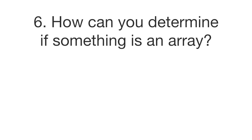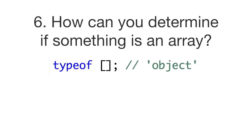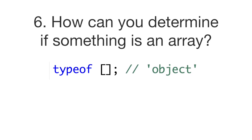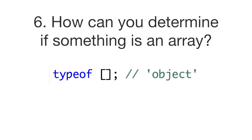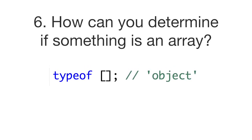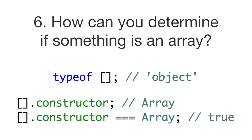Question number six: how can you determine if something is an array? If we do typeof on an array we get 'object', so that doesn't work. Instead we can use the constructor property. If we do array.constructor we get the global Array constructor, so we can do array.constructor === Array to determine if something is an array.